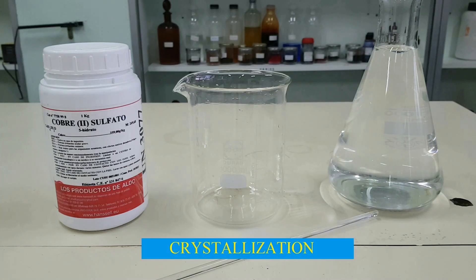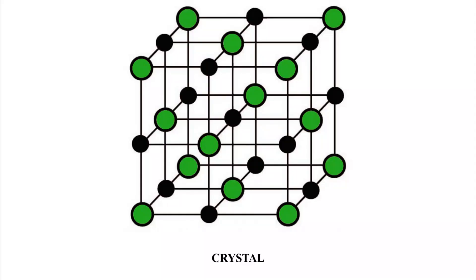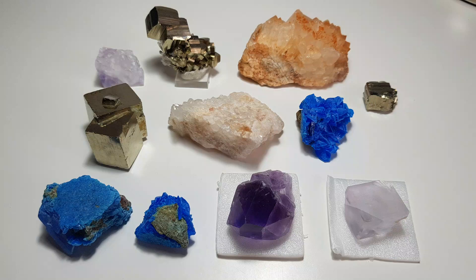Let's do a crystallization. A crystallization is a method of separating a solid that is in solution through the formation of crystals. A crystal is an arrangement of atoms, molecules, or ions in the three directions of space.